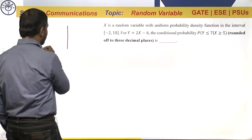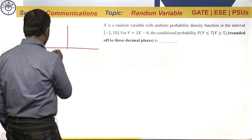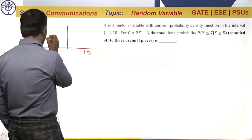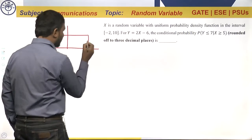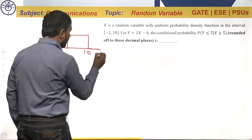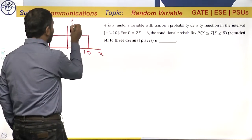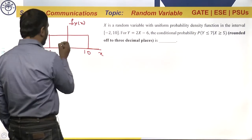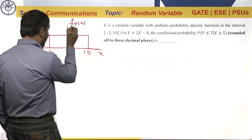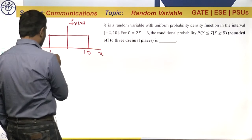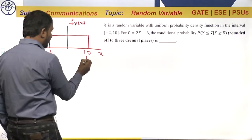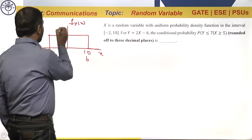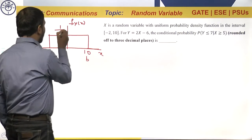From that information, minus 2 to 10 is a uniform probability density function. So fx of x — if we have a uniform probability density function with a and b, its probability density function will be 1 by b minus a. So this will be equal to 1 by 12.